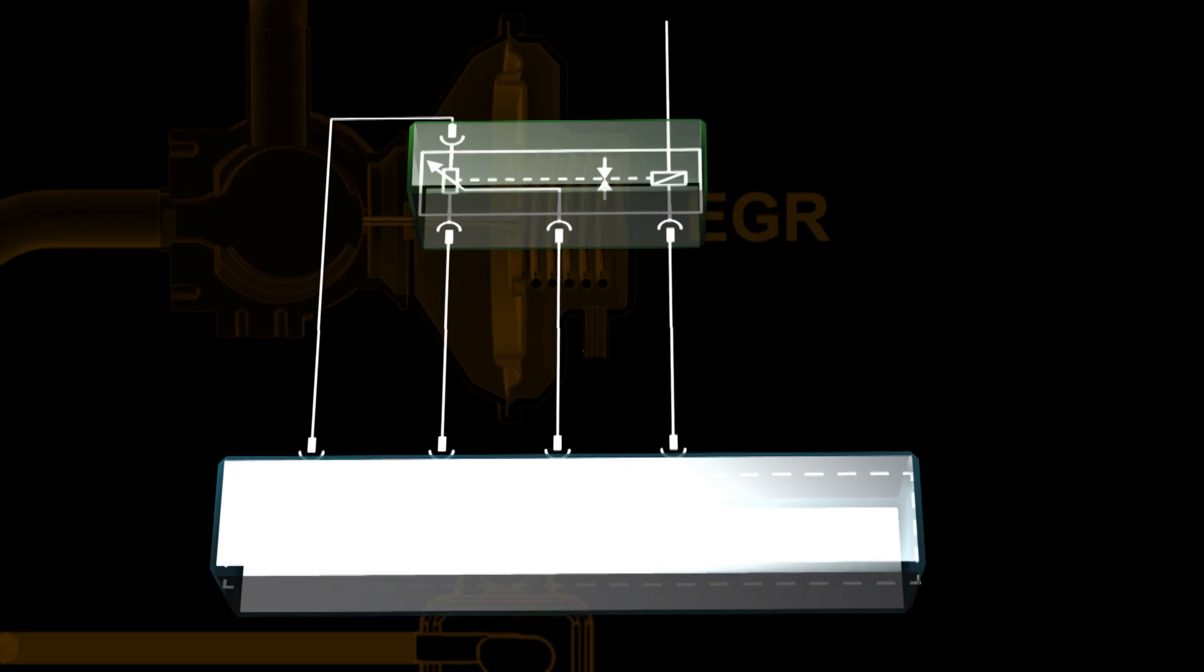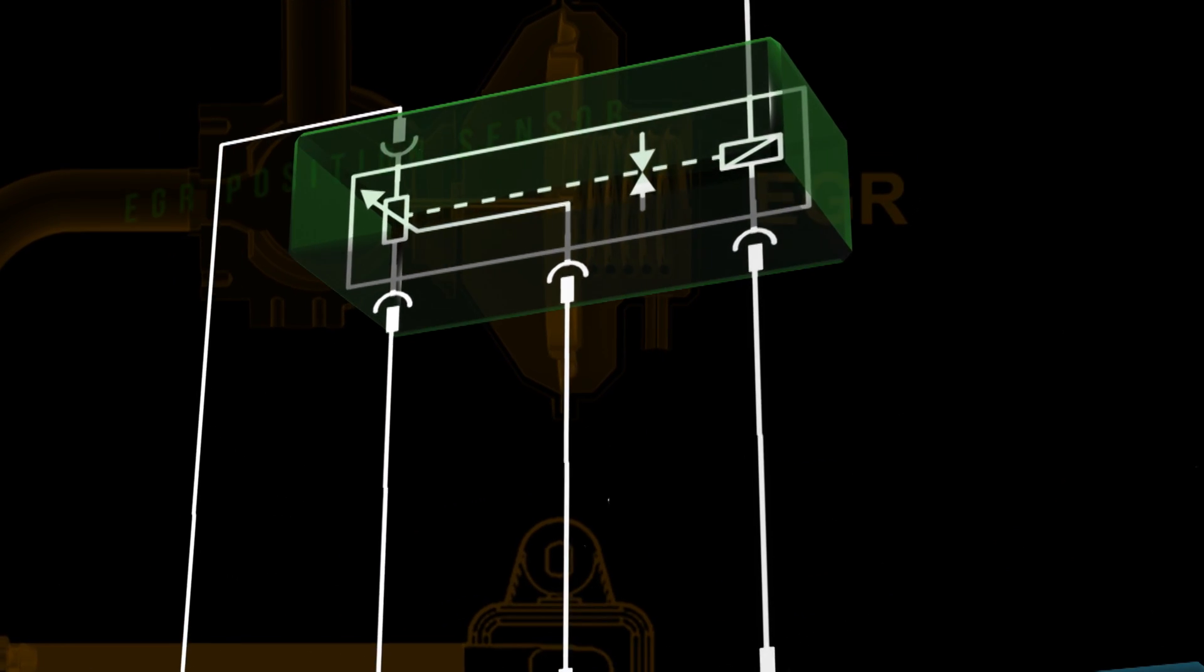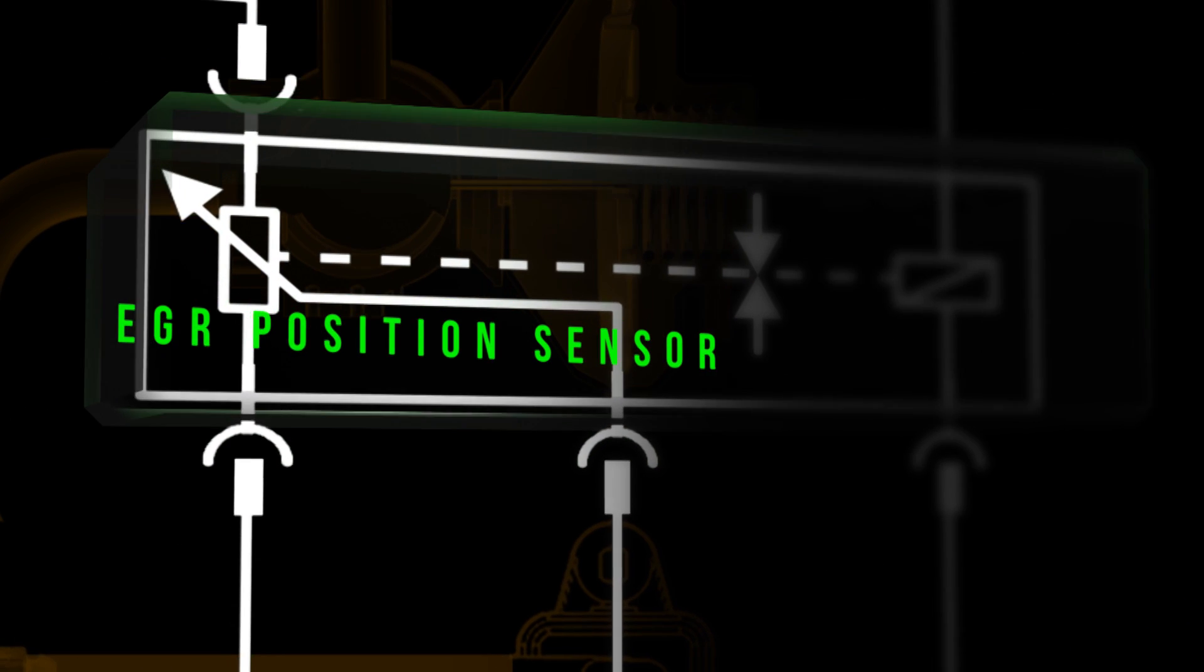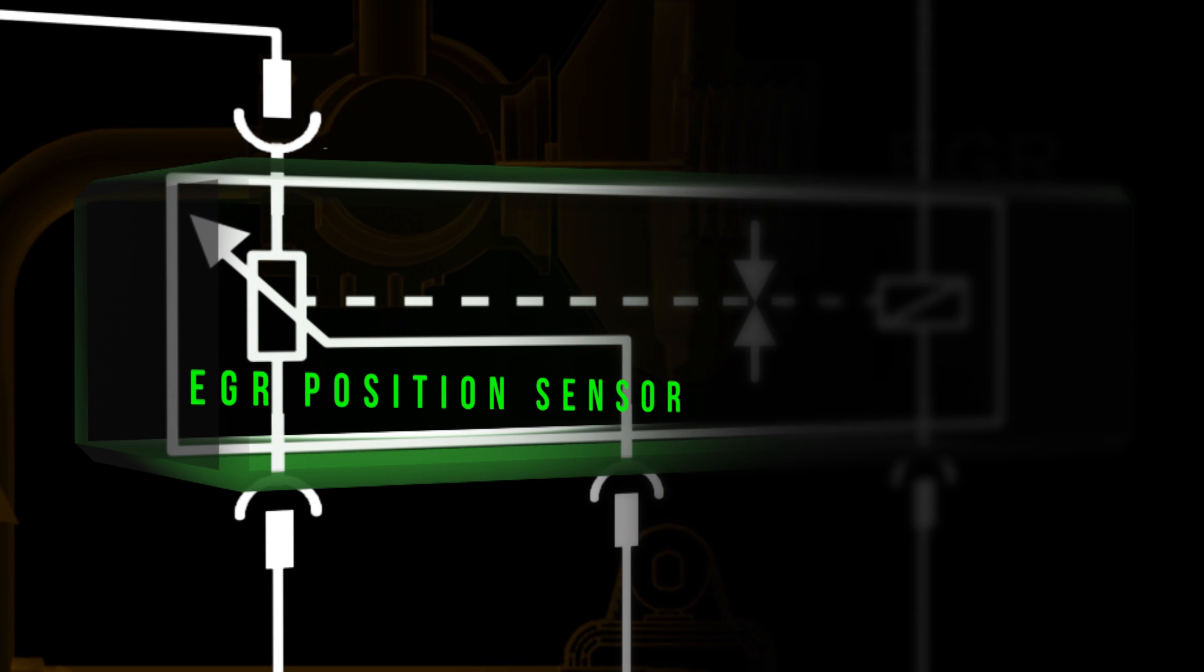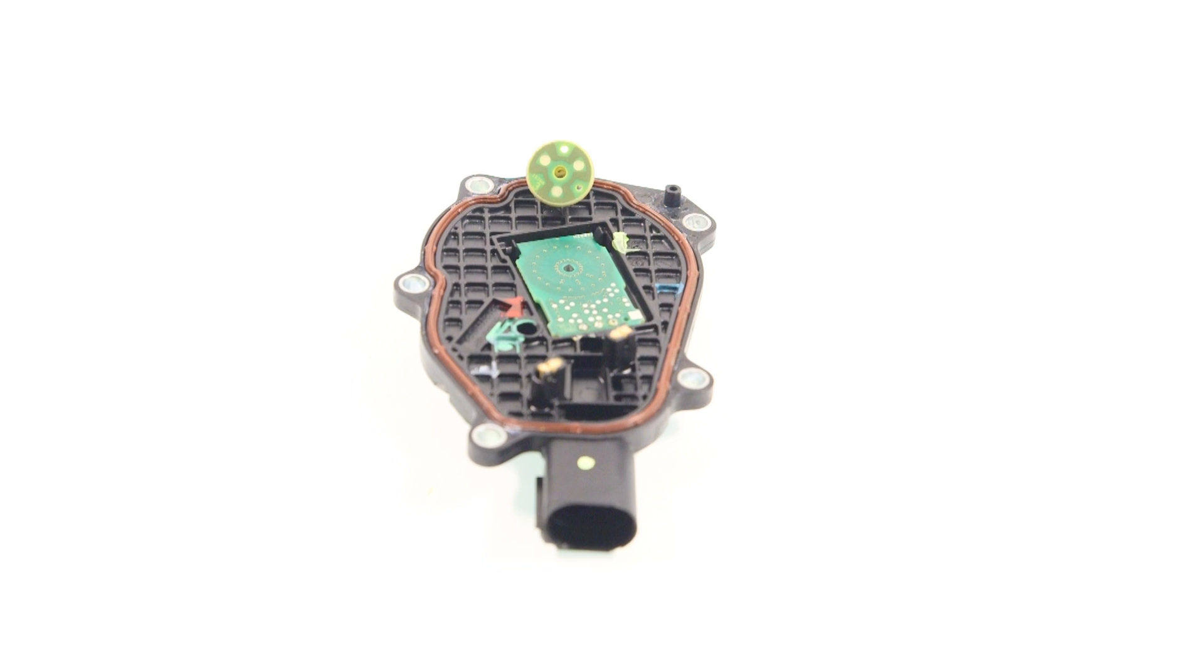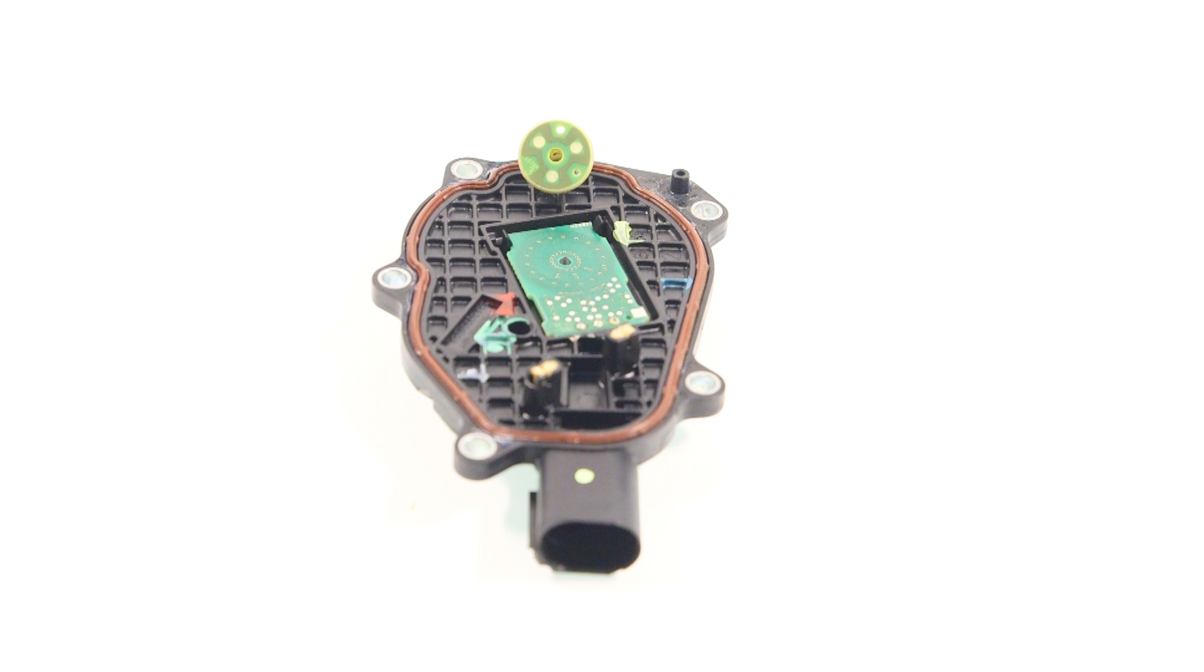Common EGR position sensors are potentiometer type which modify a supplied voltage based on a sweep arm position. But more and more manufacturers are now using a contactless inductive position sensor.